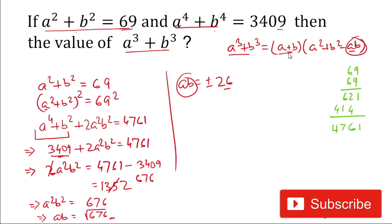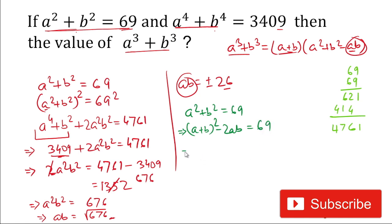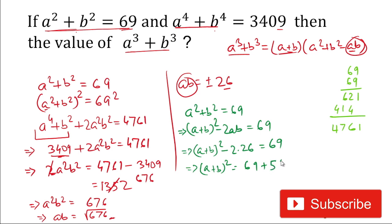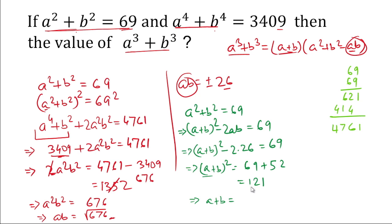Now we need to calculate the value of a + b. We know a² + b² = 69. We can write a² + b² = (a+b)² - 2ab. So (a+b)² = a² + b² + 2ab = 69 + 2×26 = 69 + 52 = 121. Therefore a + b = √121 = ±11.